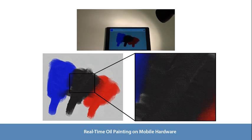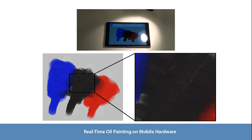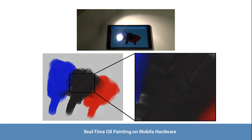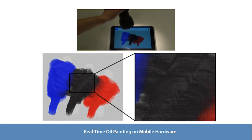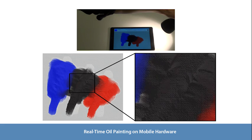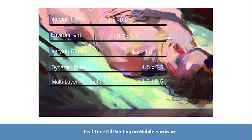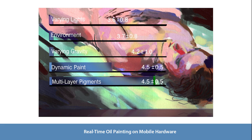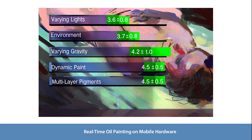Apart from the virtual lights, we use the front-facing camera to capture a video stream modeling the physical ambient lighting. This allows the user to change the lighting condition by physically moving a light source near the camera. We performed a user study to test the usefulness and quality of our contributions. We found that simulated paint and multi-layer pigments are very beneficial to the painting experience. Additionally, the ability to alter the gravity direction proves to be useful for most artists.